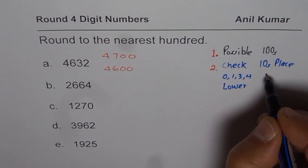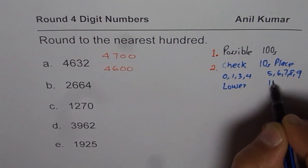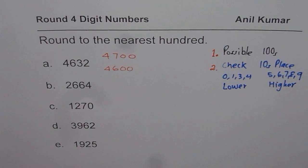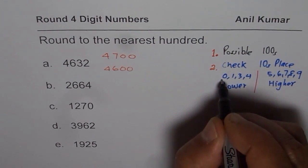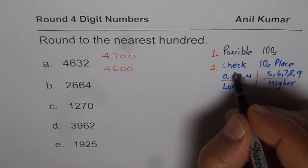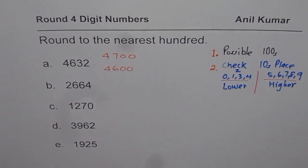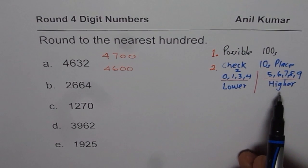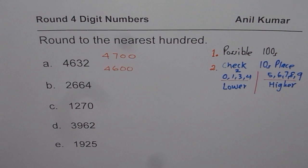If the number is 5 or more—5, 6, 7, 8, or 9—then you have to select the higher answer. So that is how we should be rounding. Check the tens place and see if the number is 0, 1, 2, 3, or 4. In that case, select the lower number. If it is higher, meaning 5 or more, then select the higher number.